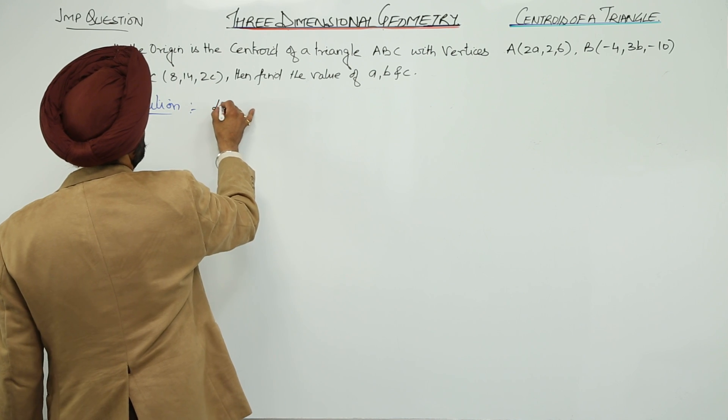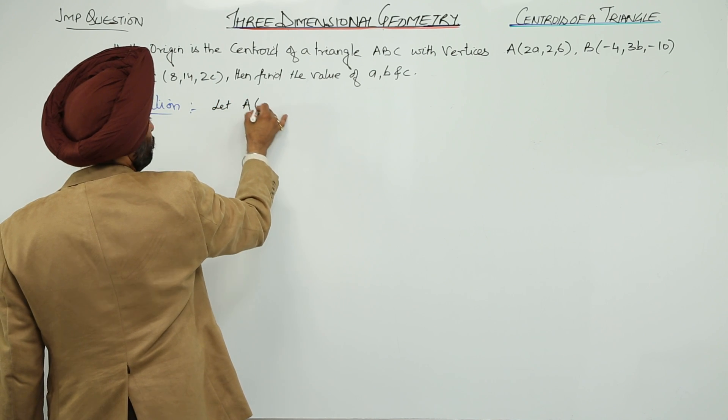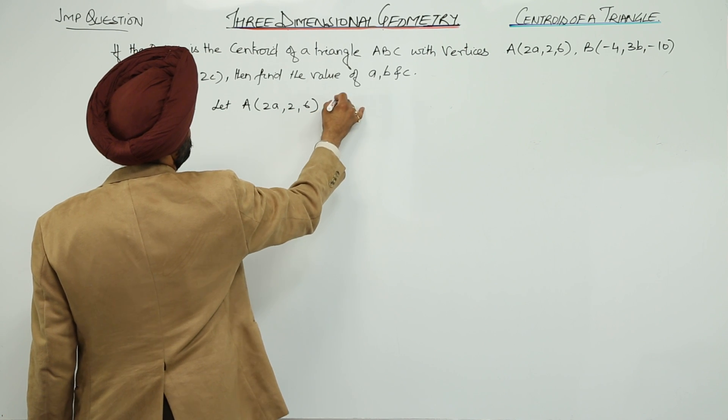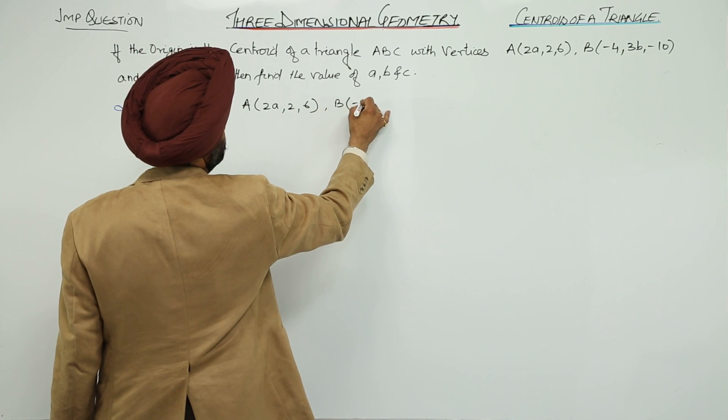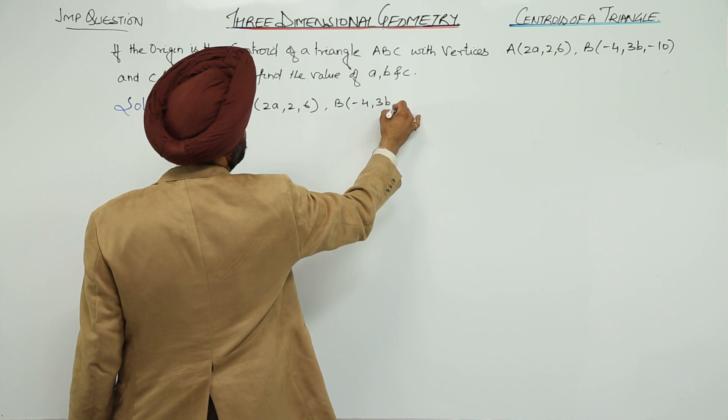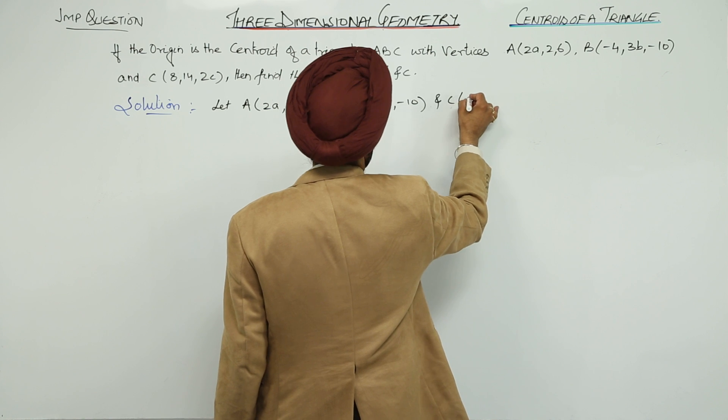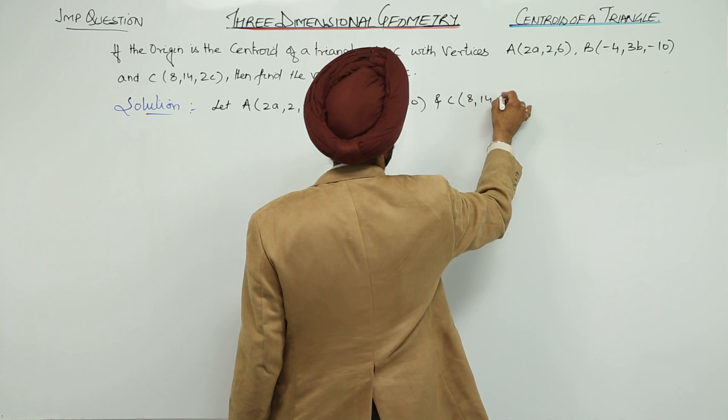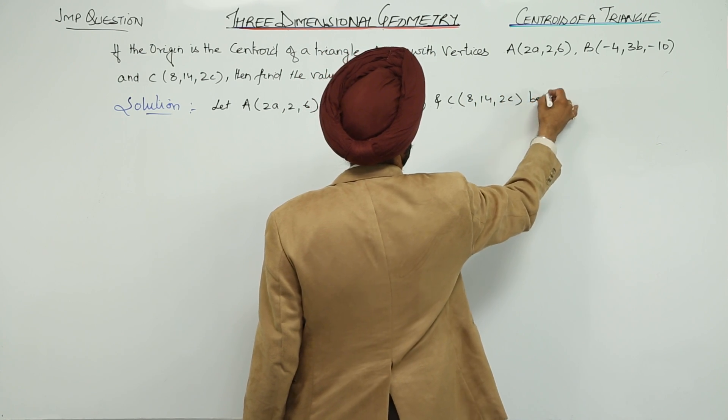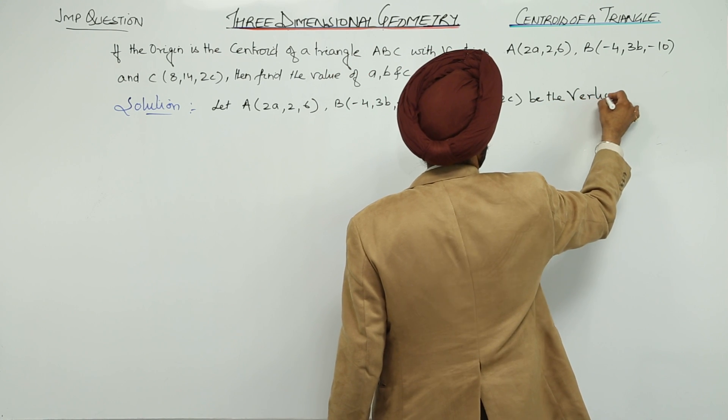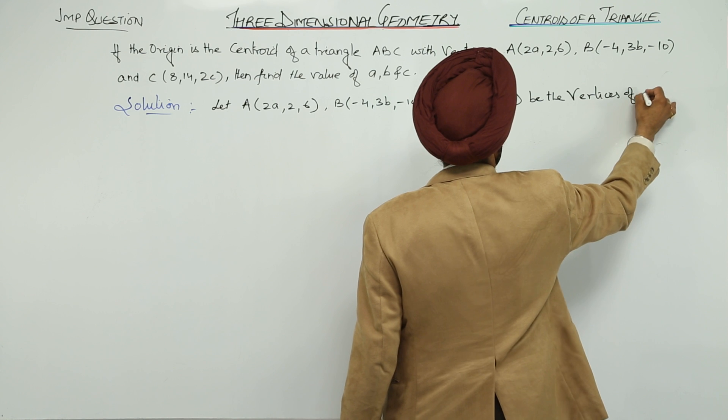Let A(2a, 2, 6), B(-4, 3b, -10) and C(8, 14, 2c) be the vertices of triangle ABC.